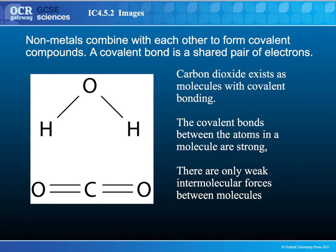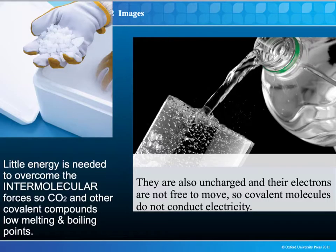Where we have two lines, we have two shared pairs of electrons. These bonds are strong — the intramolecular bonds are strong — so we have strong molecules, but there are weak interactions between the molecules. It's not like in ionic bonds, where you have positive and negative charges interacting and attracting each other. Because of the weak intermolecular forces between molecules, you end up with compounds that have really low melting points and really low boiling points.